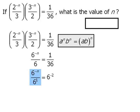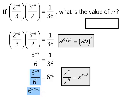From here, we can combine these two terms by applying the quotient law for exponents to get 6 to the power of negative n minus 1. And this, of course, is equal to 6 to the power of negative 2.